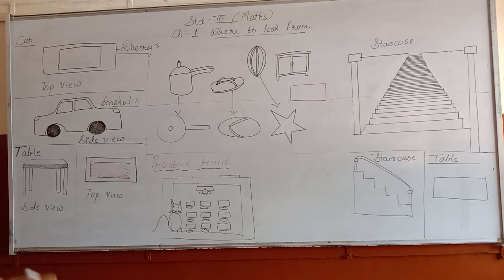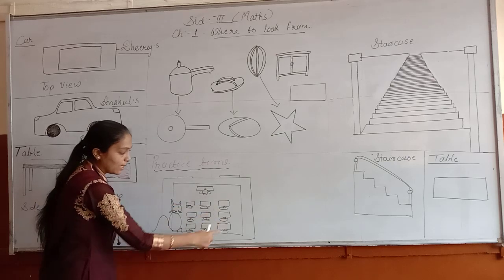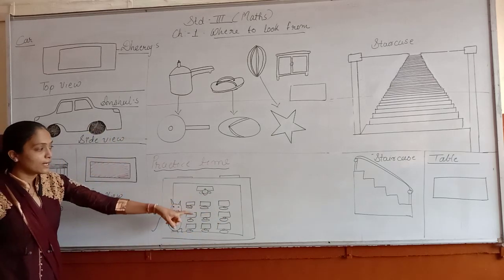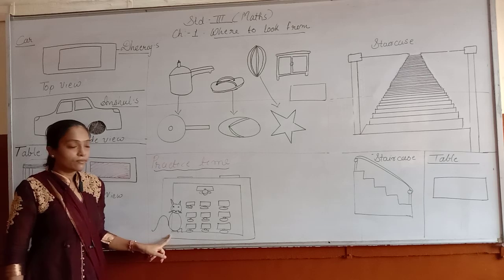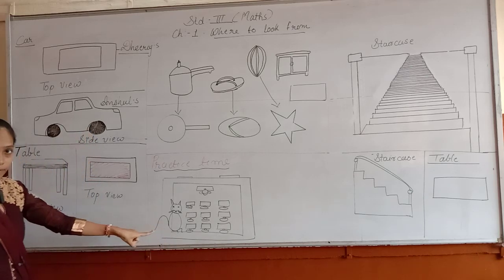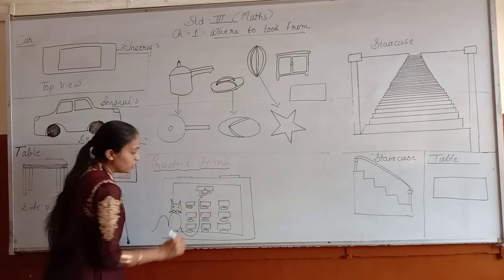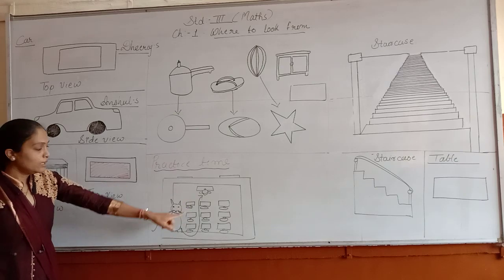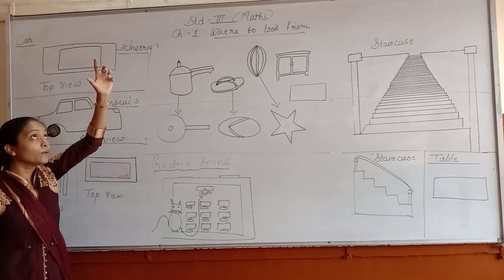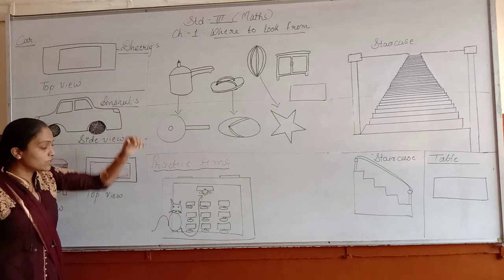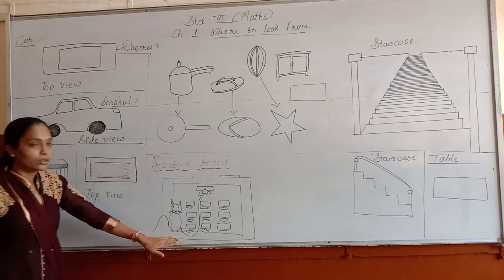Now we will see your practice time. In this picture you can see this is a cat and this is a classroom. The cat is sleeping inside and looking from the top — she is searching for the teacher. You can use your pencil and draw the line. The cat is watching the classroom and searching for the teacher. So here is the teacher. This picture is given in your textbook.